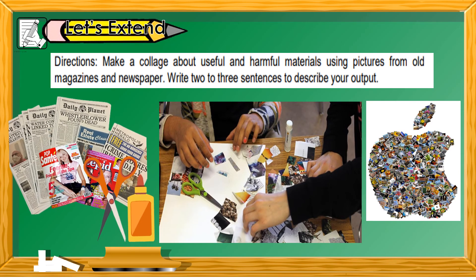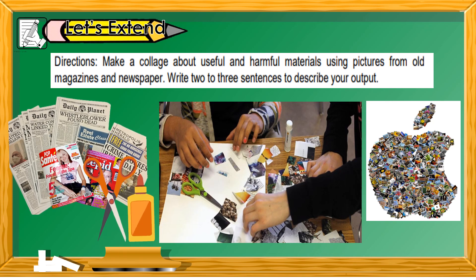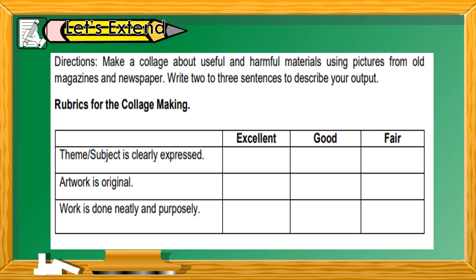Now for the next activity, let's extend. Directions: Make a collage about useful and harmful materials using pictures from old magazines and newspapers. Write two or three sentences to describe your output. You will need old magazines, newspapers, scissors, and glue. In your collage activity, there is a rubric to follow: the theme and subject should be clear. It will be rated as excellent, good, or fair. Artwork should be original, and work done neatly and purposefully. I will be the one to rate your output. Thank you.